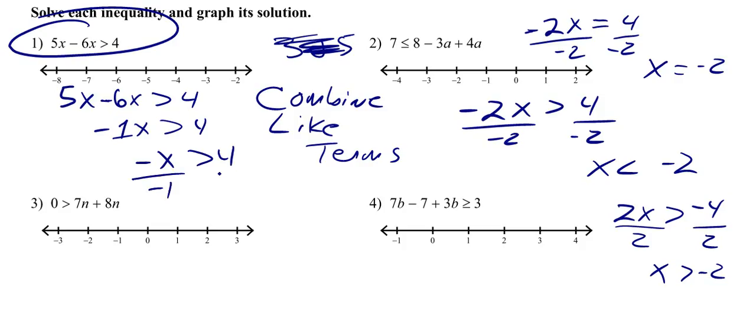Divide both sides by negative 1. And remember, we're flipping the inequality. So we know x can be less than negative 4. Don't forget that negative sign. And that's an open dot because there's not a bar here.